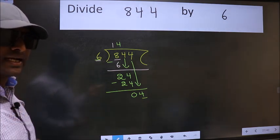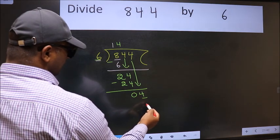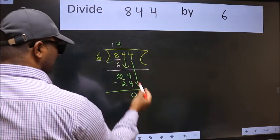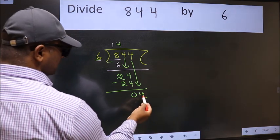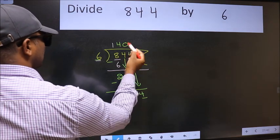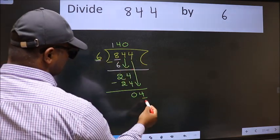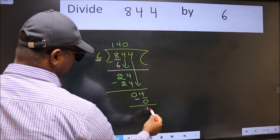Instead of that, what you should think of doing is, which number should we take here. If I take 1, we will get 6. But 6 is larger than 4. So what we do is, we take 0. So 6 into 0 is 0. Now we subtract. We get 4.